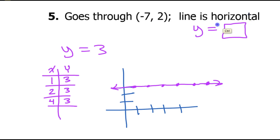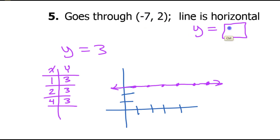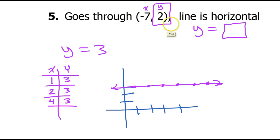With that in mind, if I know it's horizontal, it's going to be y equals something. Is there a quick way I can just look at this one point and tell what the y value has to be? Well, sure — this is x and this is y. I can see right now that the y value is 2. So y must equal 2. That's it: y is equal to 2.